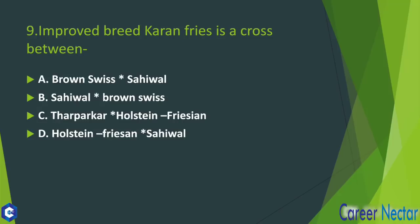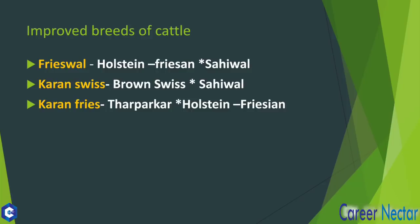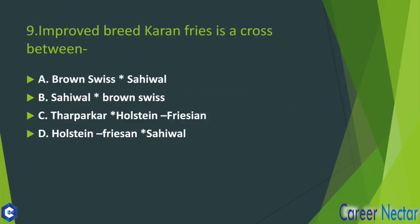Next question: An improved breed of cattle is a cross between which breeds? The answer to this question is Tharparkar and Holstein. So the answer to this question is option number C — Tharparkar and Holstein.